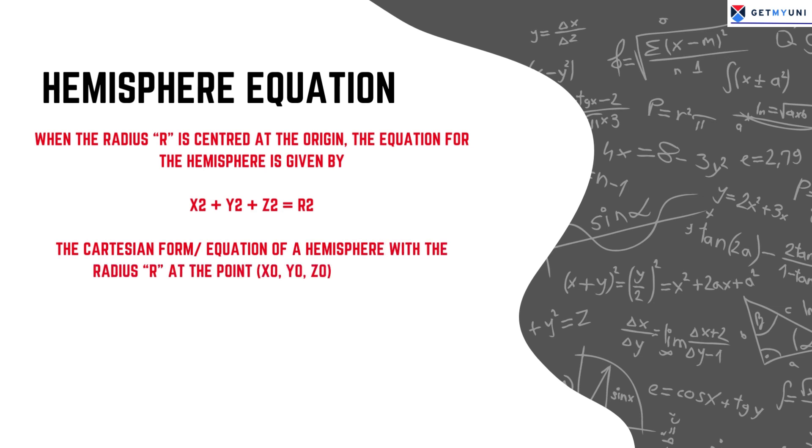at the points x0, y0 and z0 is given as x minus x0 square plus y minus y0 square plus z minus z0 square equals r2.